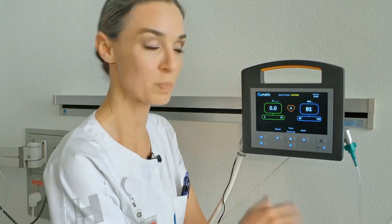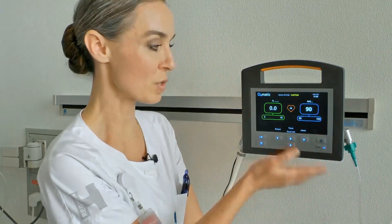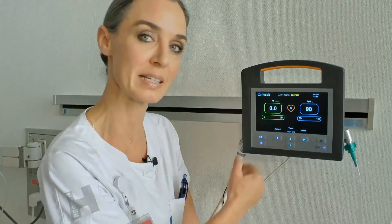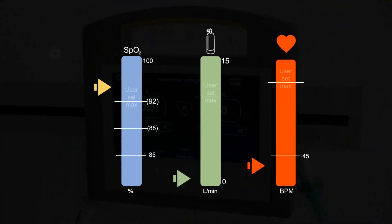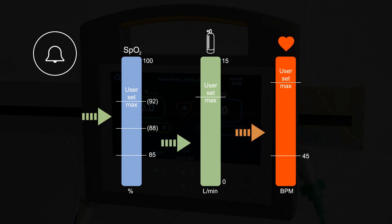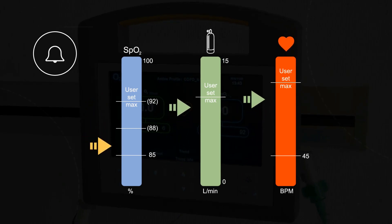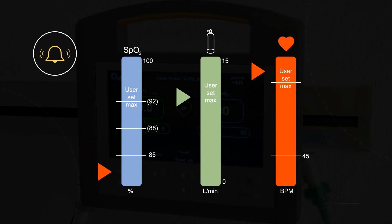In O2matic, any saturation range between 85 and 100 percent can be set. Also, the oxygen flow can be set between 0 and 15 liters per minute. If the saturation falls below the target range or if the pulse rate is outside normal, an alarm sounds.